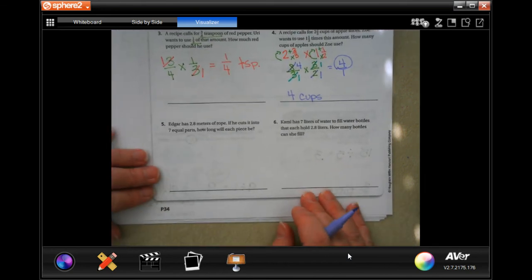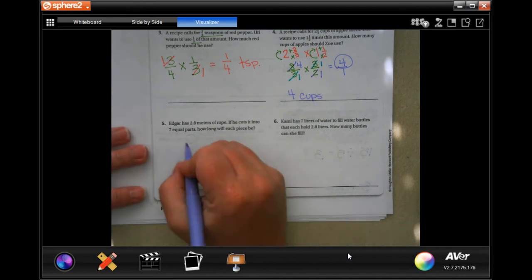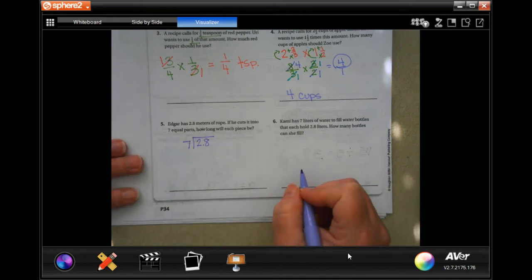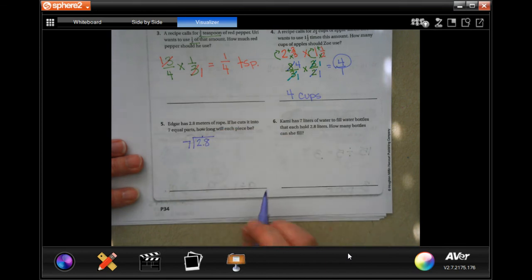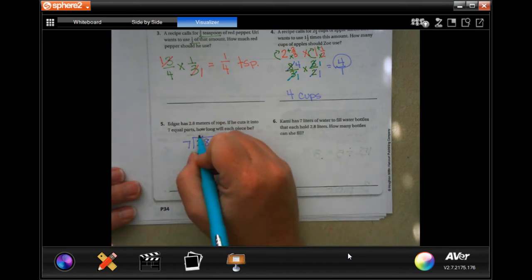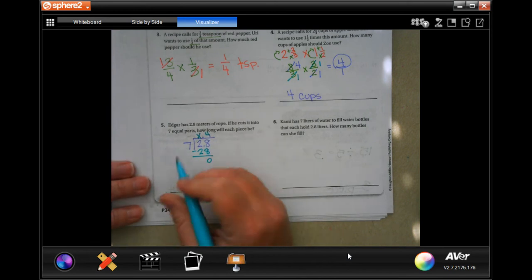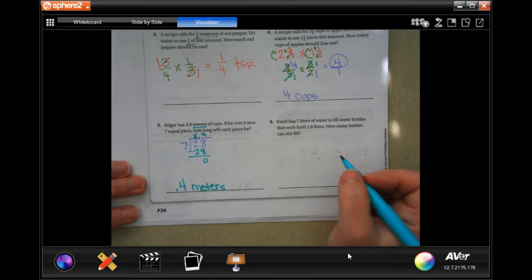Edgar has 2.8 meters of rope. If he cuts his rope into 7 equal parts, how long will each piece be? So we have 2.8 and we are cutting that into 7 equal parts. We are dividing. Do not forget to put your decimal at first thing. Now, 7 is not going to go into 2, but 7 times 4 is 28. So each piece will be 0.4 and it's being measured in meters. So 0.4 meter.